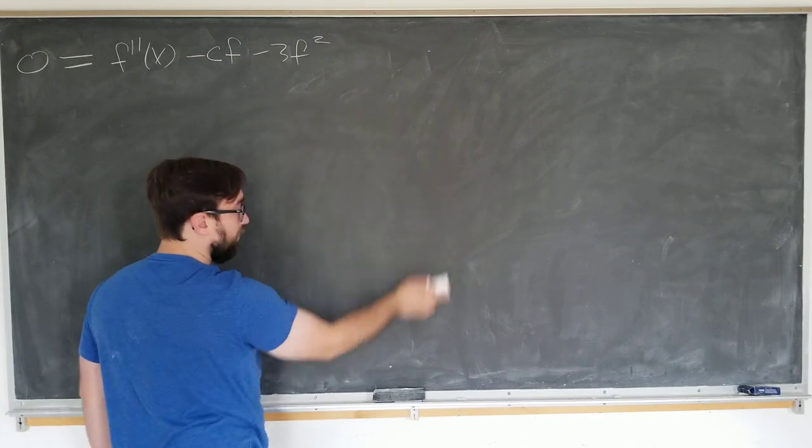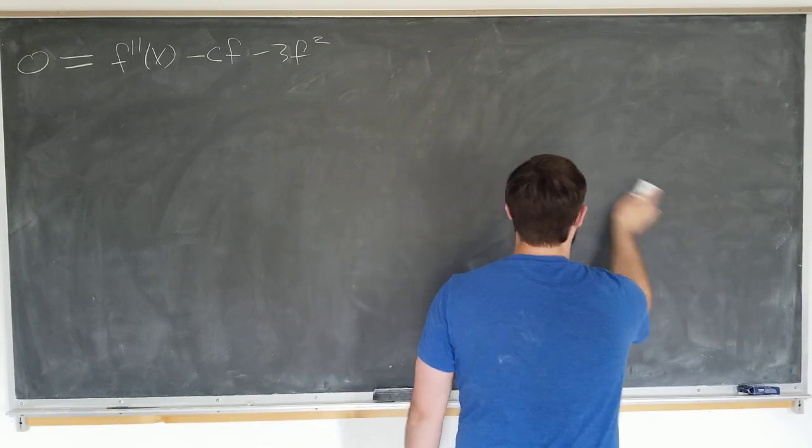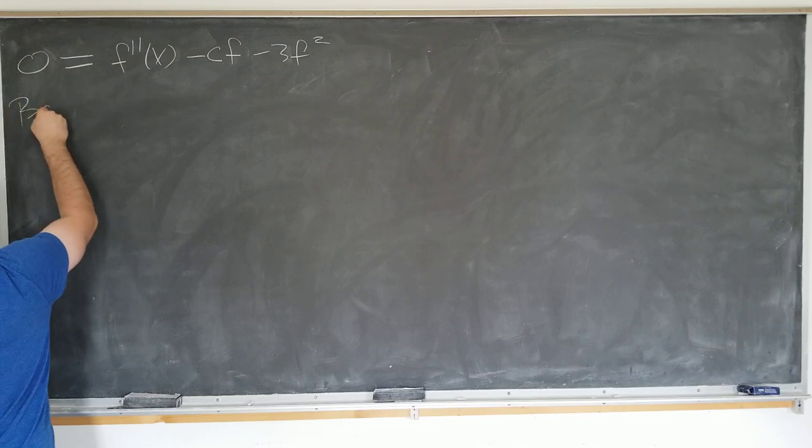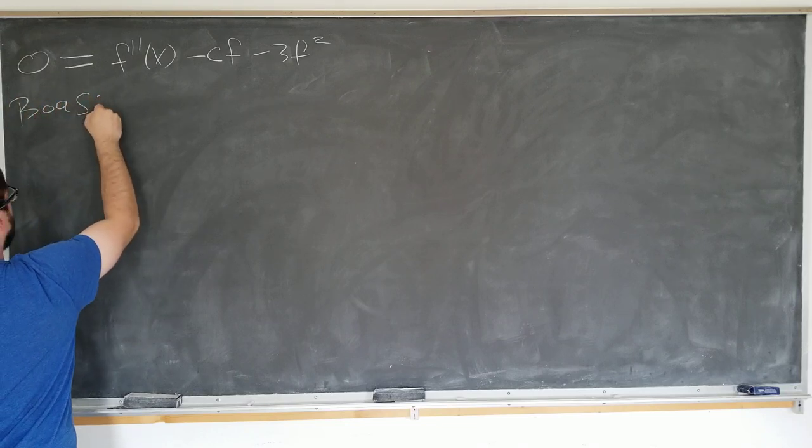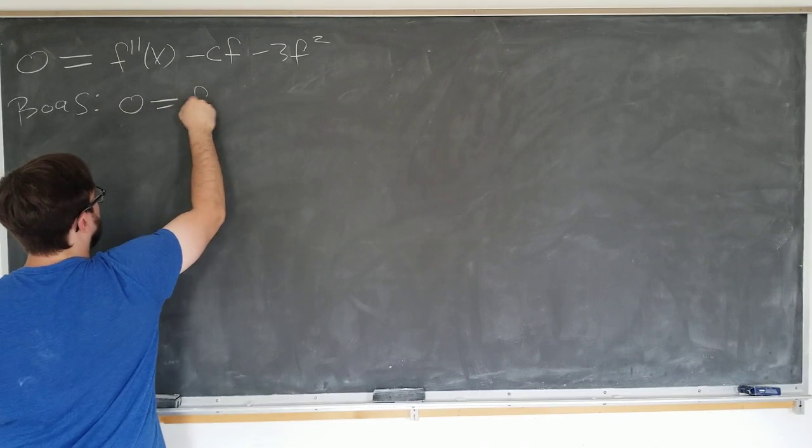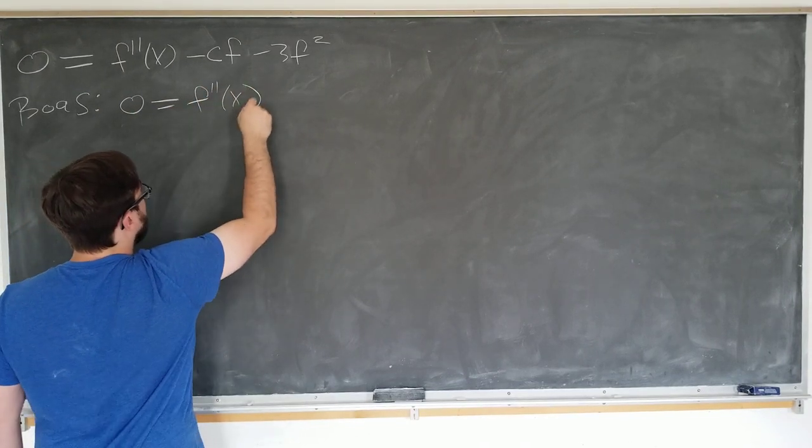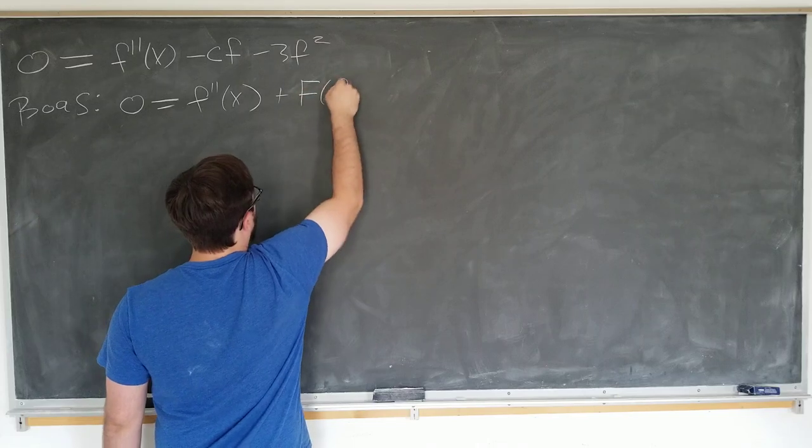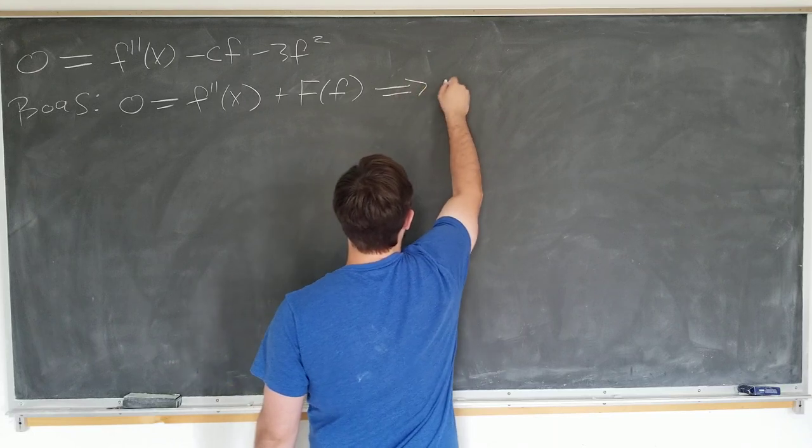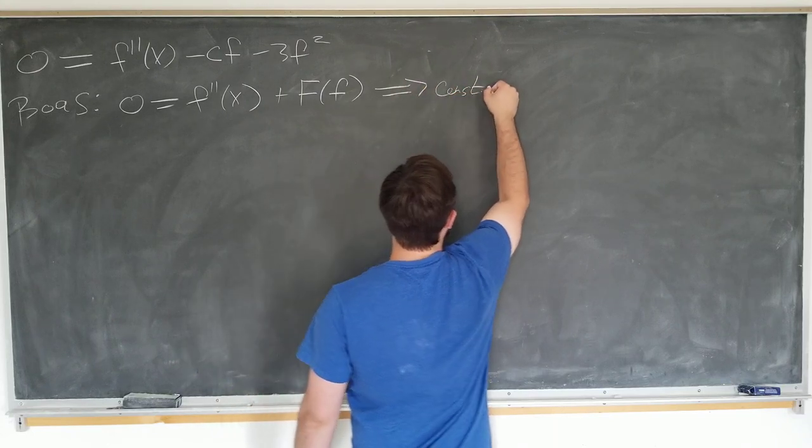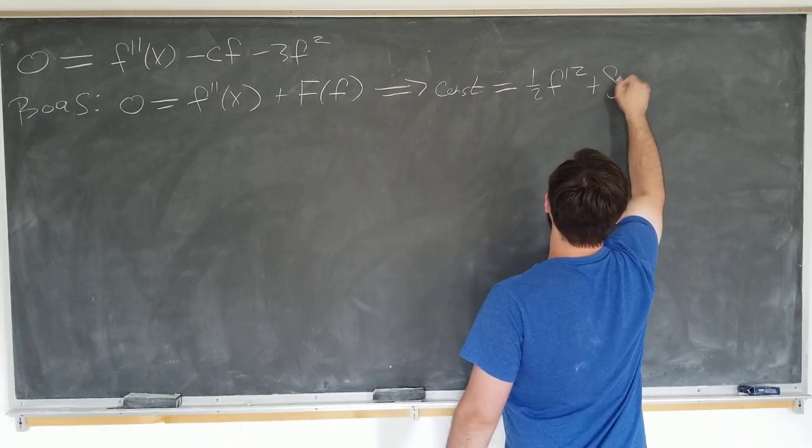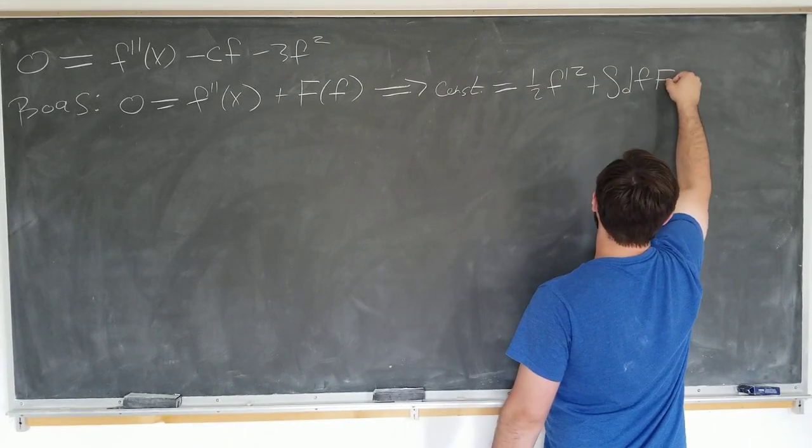Well, for that, we're going to consult one of my favorite math methods books, Mary Boas' book. In that book, she gives us a nice trick for these kind of equations. She tells us that if we have the situation here, if zero is f double prime of X plus some other function capital F of f itself, which happens pretty frequently, then some constant is equal to one half f prime squared plus integral with respect to f of f.